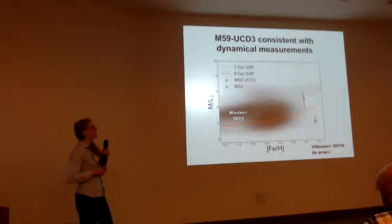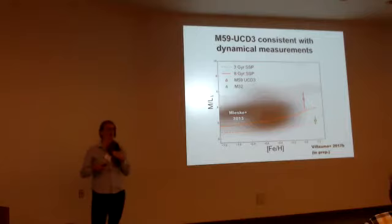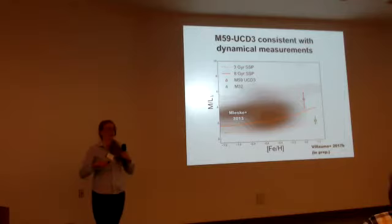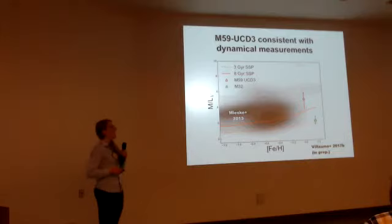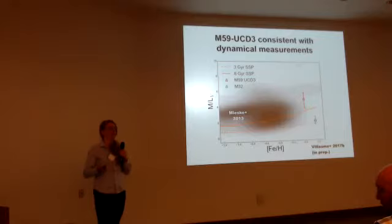This is important as we go further and study more UCDs. Especially when making estimates of black hole size in UCDs where we're unable to get kinematics, it's important to know that we should take into account the possibility of a variable IMF in these objects. M32 is doing its own thing in this parameter space, which isn't a surprise because M32 is a very different object than most UCDs.